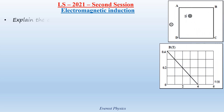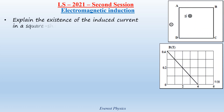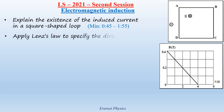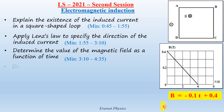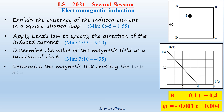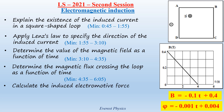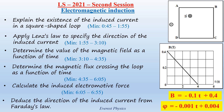In this solved official exam exercise, we are going to explain the existence of the induced current in a square-shaped loop. Apply Lenz's law to specify the direction of the induced current. Determine the value of the magnetic field as a function of time. Determine the magnetic flux crossing the loop as a function of time. Calculate the induced electromotive force. Deduce the direction of the induced current from Faraday's law.